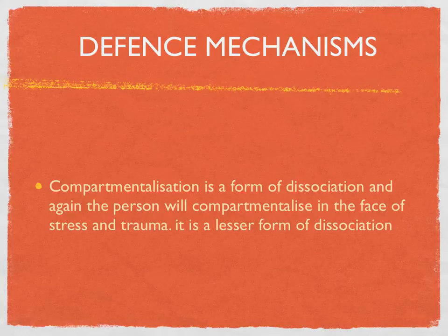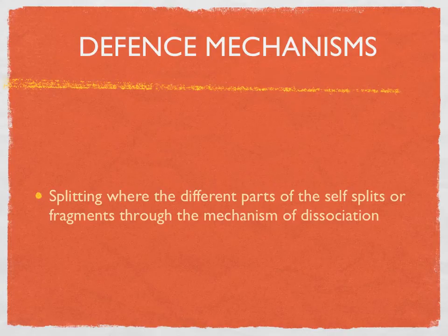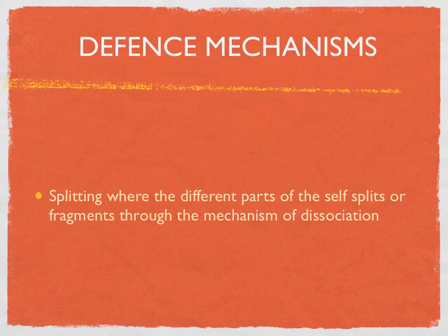Compartmentalisation is a form of dissociation — the person will compartmentalise in the face of stress and trauma; this is a lesser form of dissociation. Splitting is where the different parts of the self split or fragment through the mechanism of dissociation. Splitting is used creatively as a defence mechanism — they are defending against the real self, and sometimes splitting is called the move to the adapted self. Either way, the therapist's job is to help the person integrate the different parts.